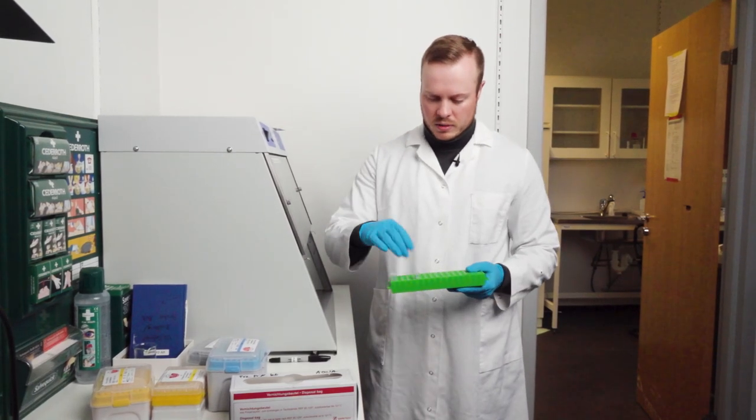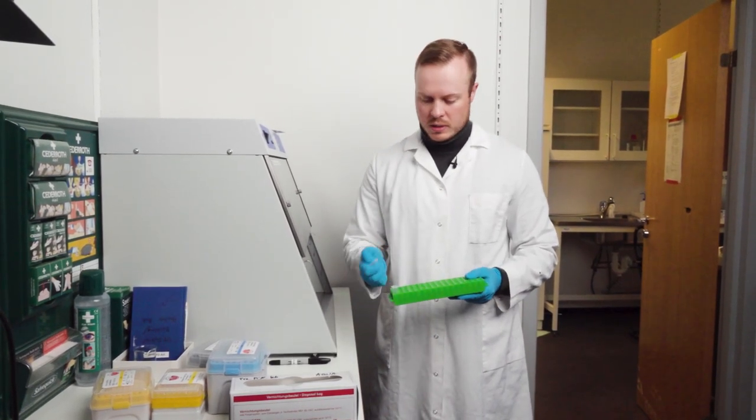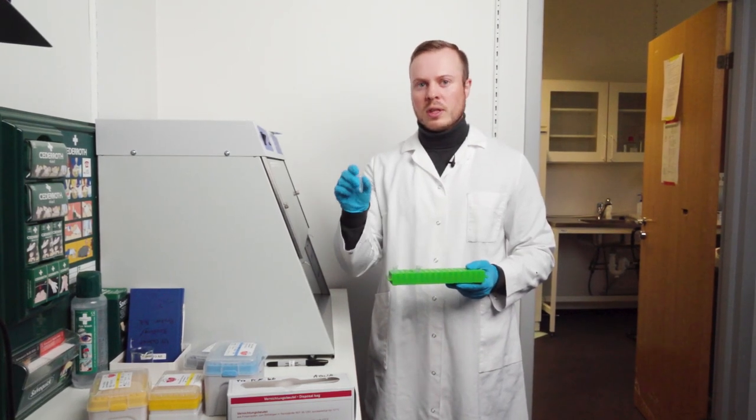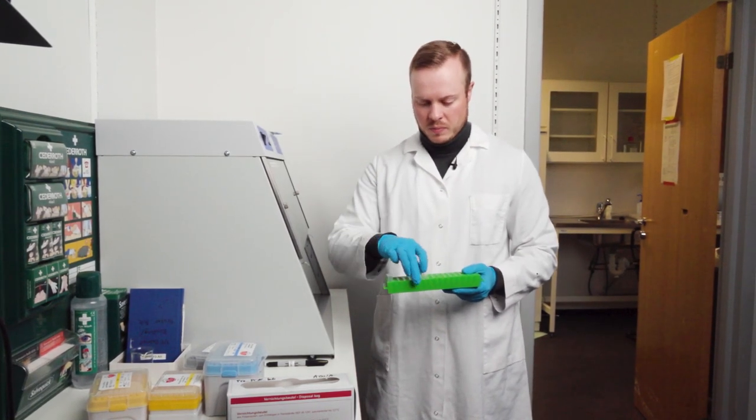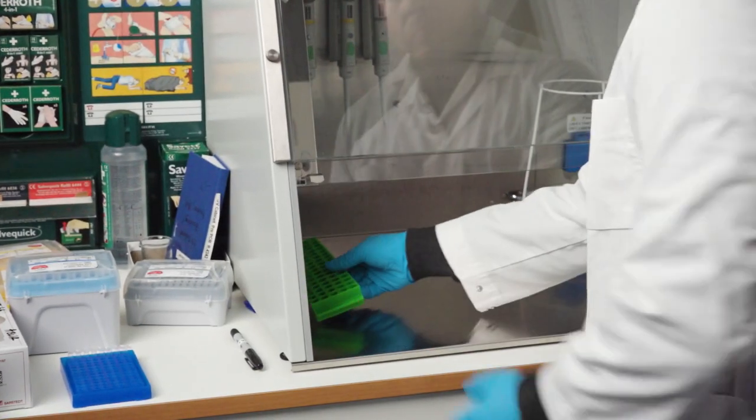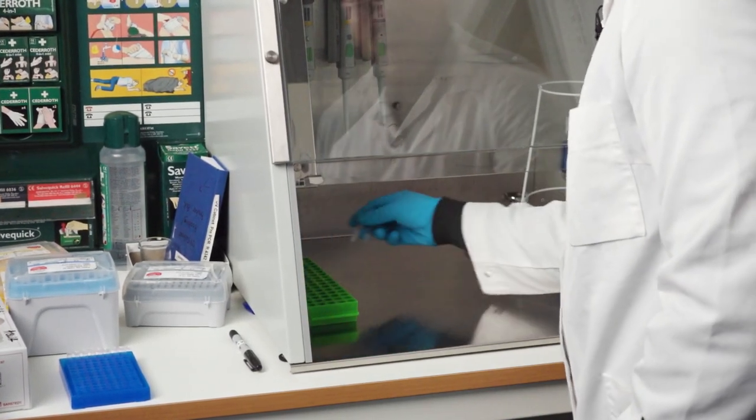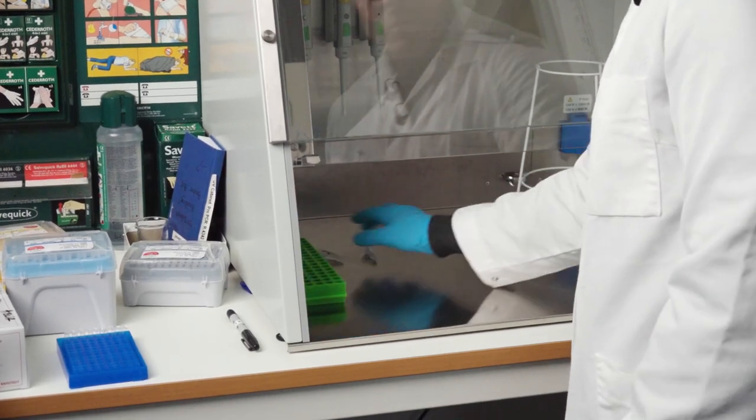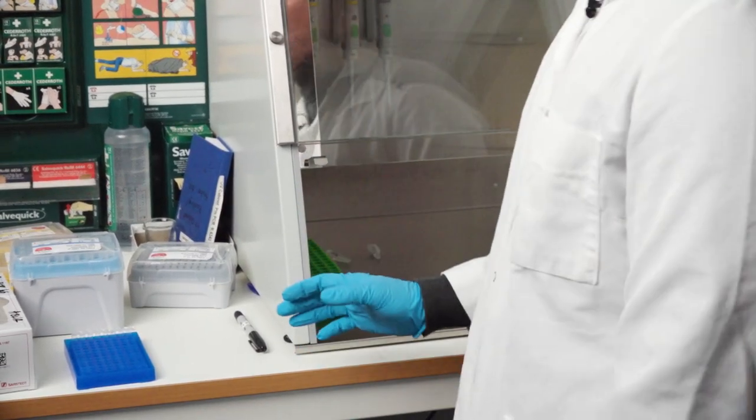So the first thing that is very important to sterilize is the vials with PCR water because PCR water is the main contaminant in PCRs. So I move them into the cabinet and actually take the vials out of the rack so it gets maximum exposure to UV light.